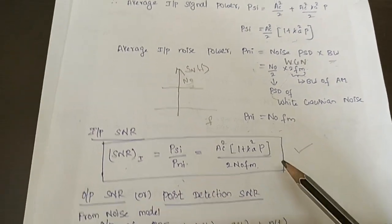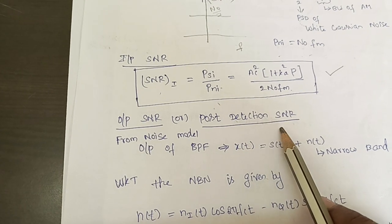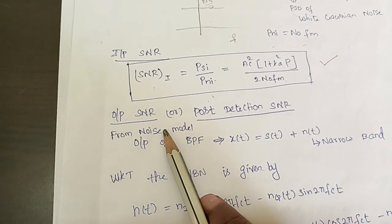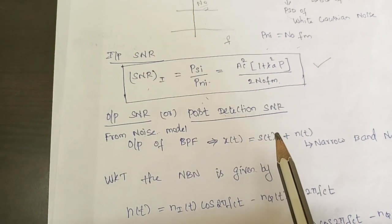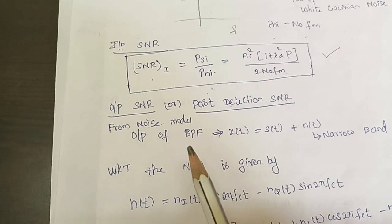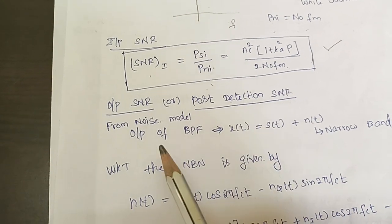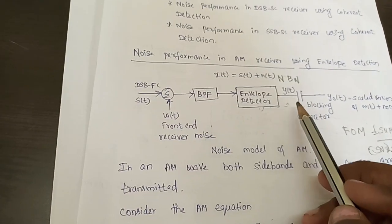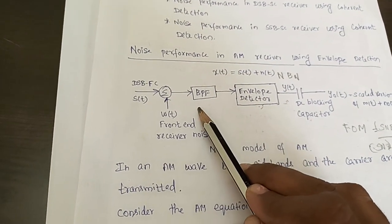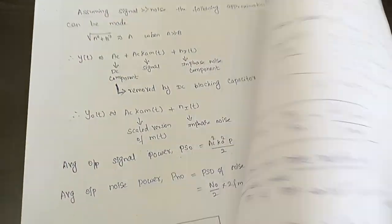So one part is over. The next part is to find the output signal to noise ratio, which we can name as post-detection SNR. This is the ratio of signal power to noise power at the output of the receiver. For finding this post-detection SNR, we have to go block by block — finding the output of each block in the noise model: BPF, then envelope detector, then DC blocking capacitor.